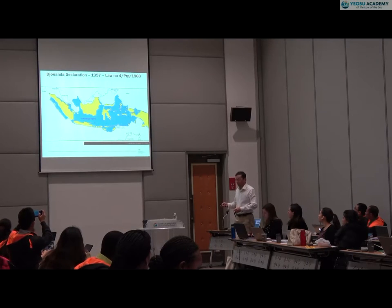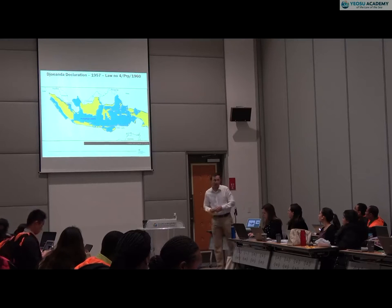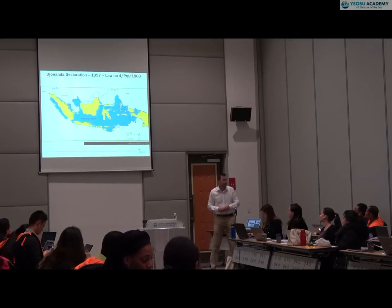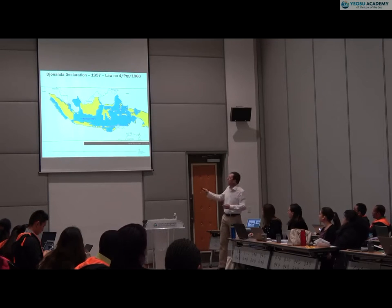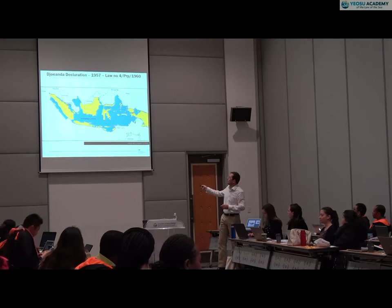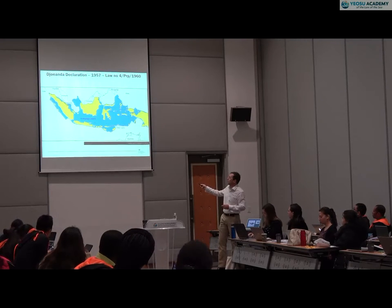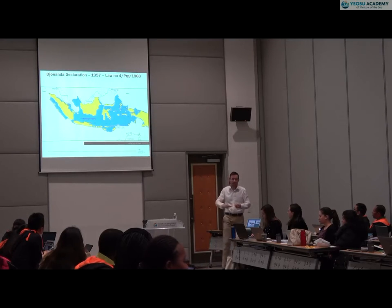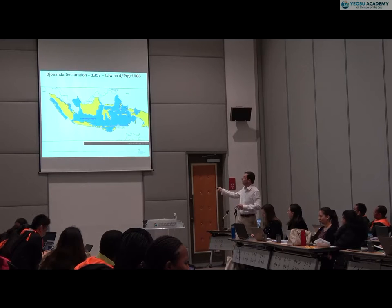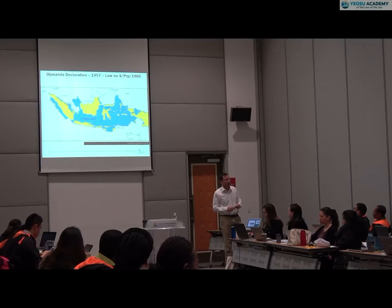One thing to draw attention to is that Indonesia left a door ajar — not completely closed. At that time there was Portuguese Timor, and the archipelagic baselines came up to a point and started again at another point. Because you could sail around Portuguese Timor and into Indonesia's archipelagic waters without ever crossing an archipelagic baseline, there was a back door left open.